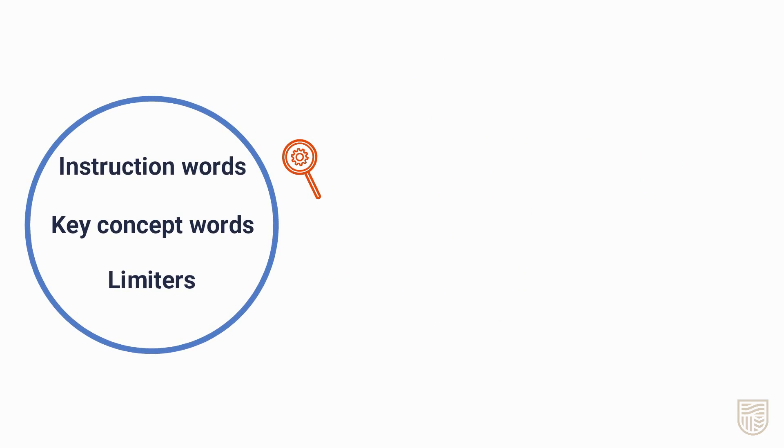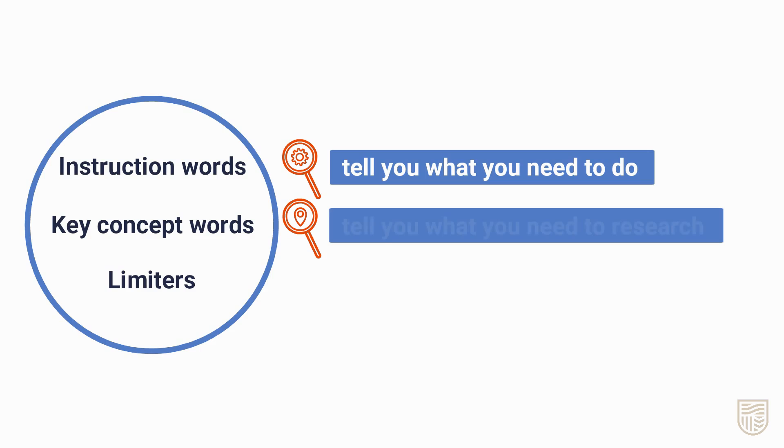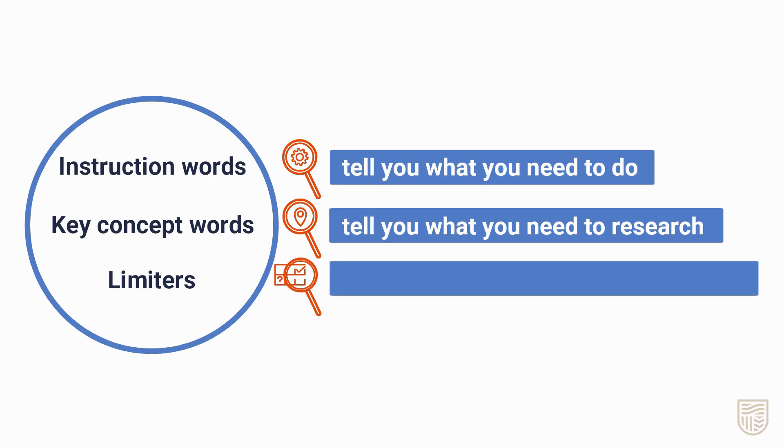Instruction words are verbs or action words that tell you what you need to do. Key concept words describe the main topic and tell you what you need to research. Limiters tell you the focus or restrictions of the key concept.